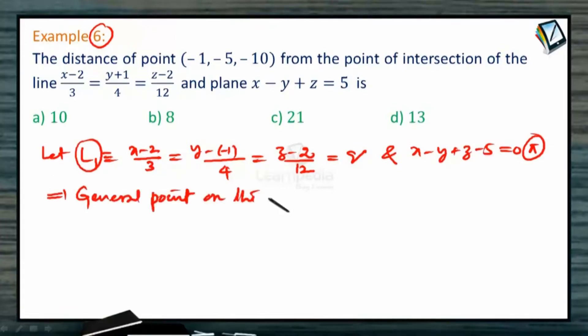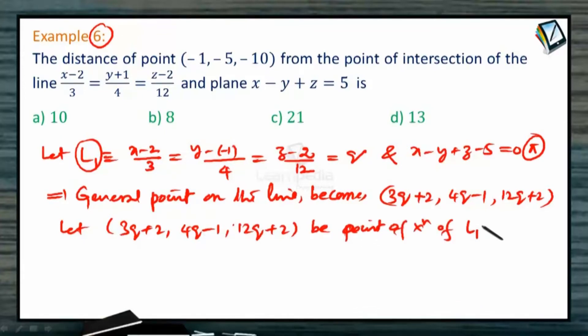Hence the general point on this line becomes 3q plus 2, 4q minus 1, and 12q plus 2. Let 3q plus 2, 4q minus 1, and 12q plus 2 be point of intersection of L1 and pi. Hence, this should lie on the plane. So 3q plus 2 minus of 4q minus 1 plus of 12q plus 2 minus 5 must equal 0.